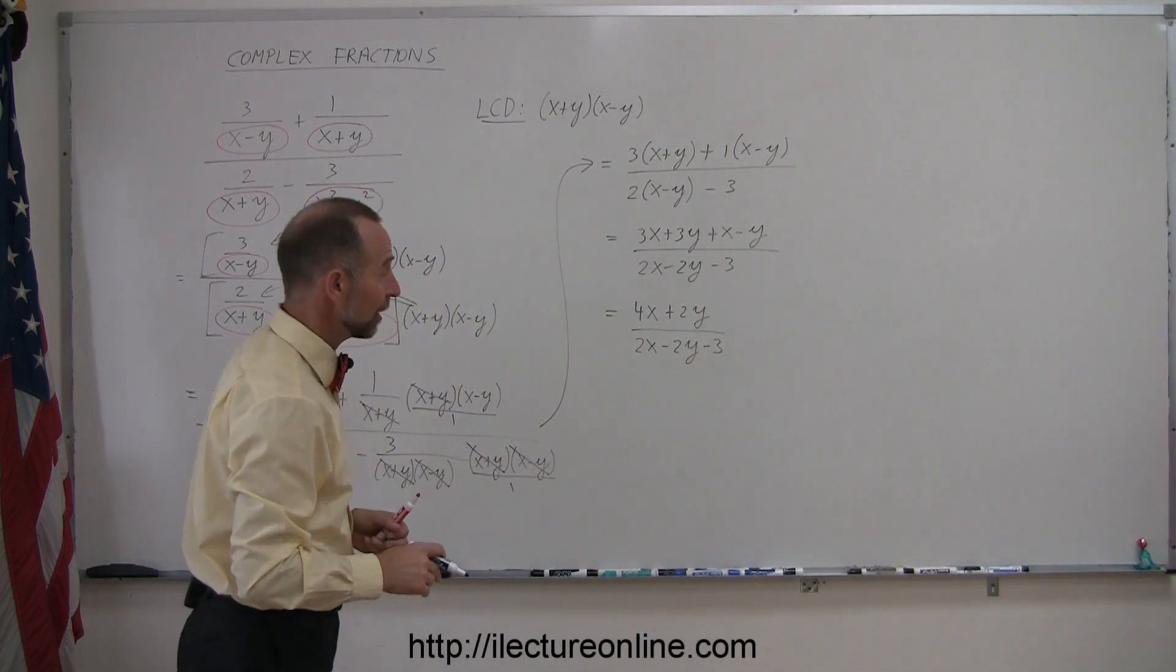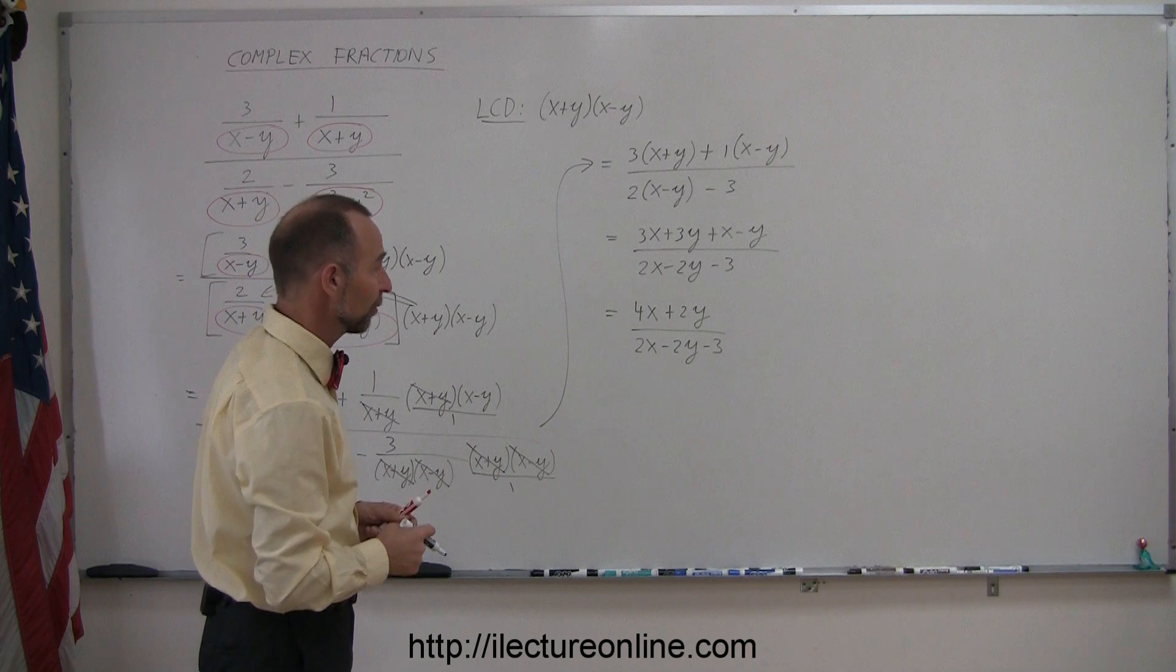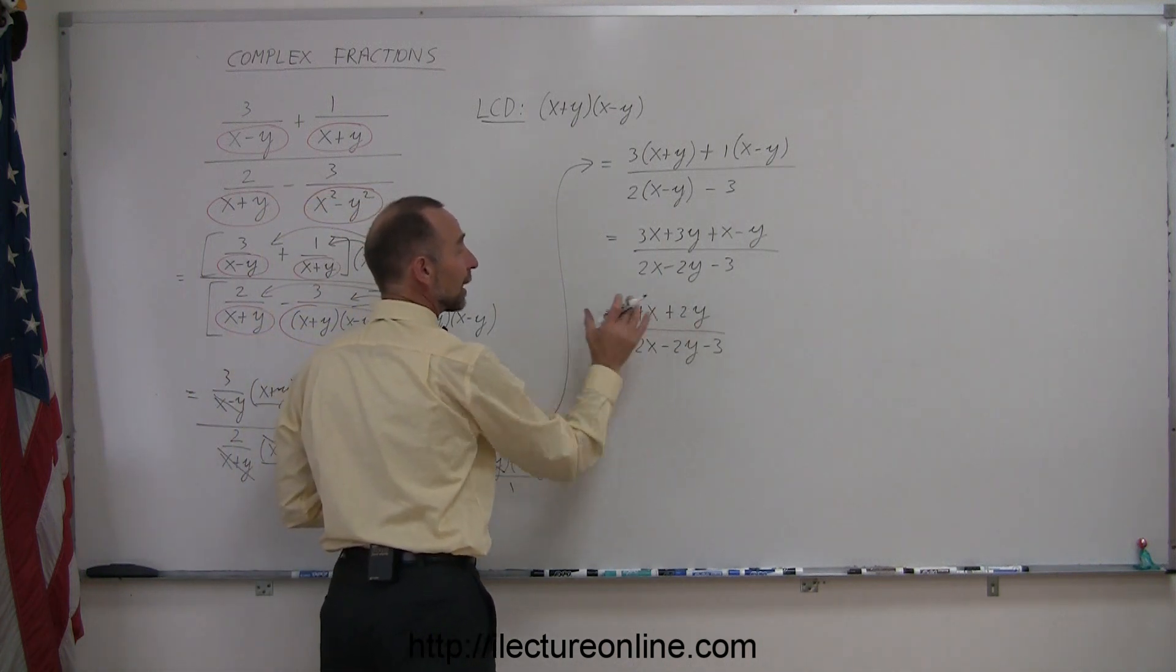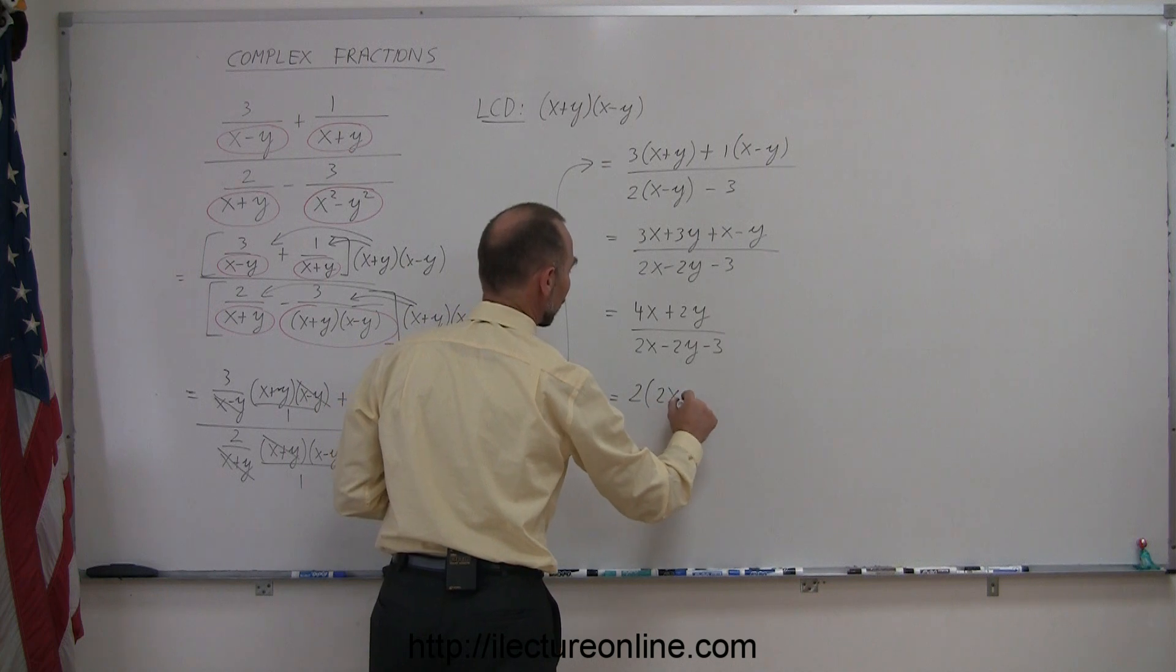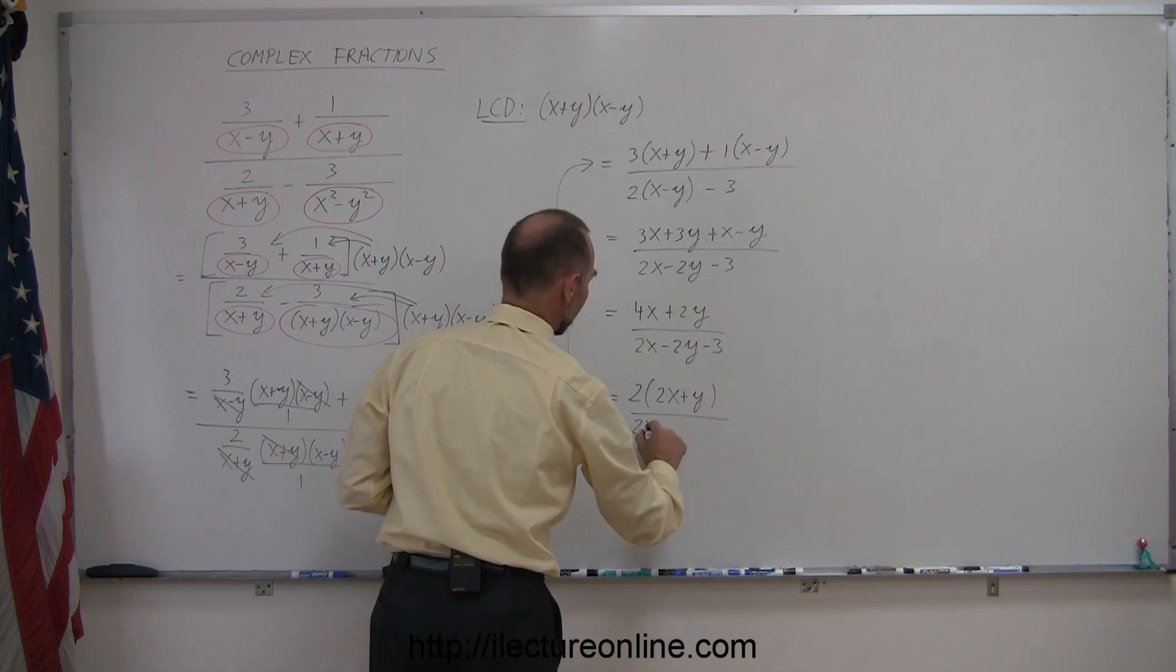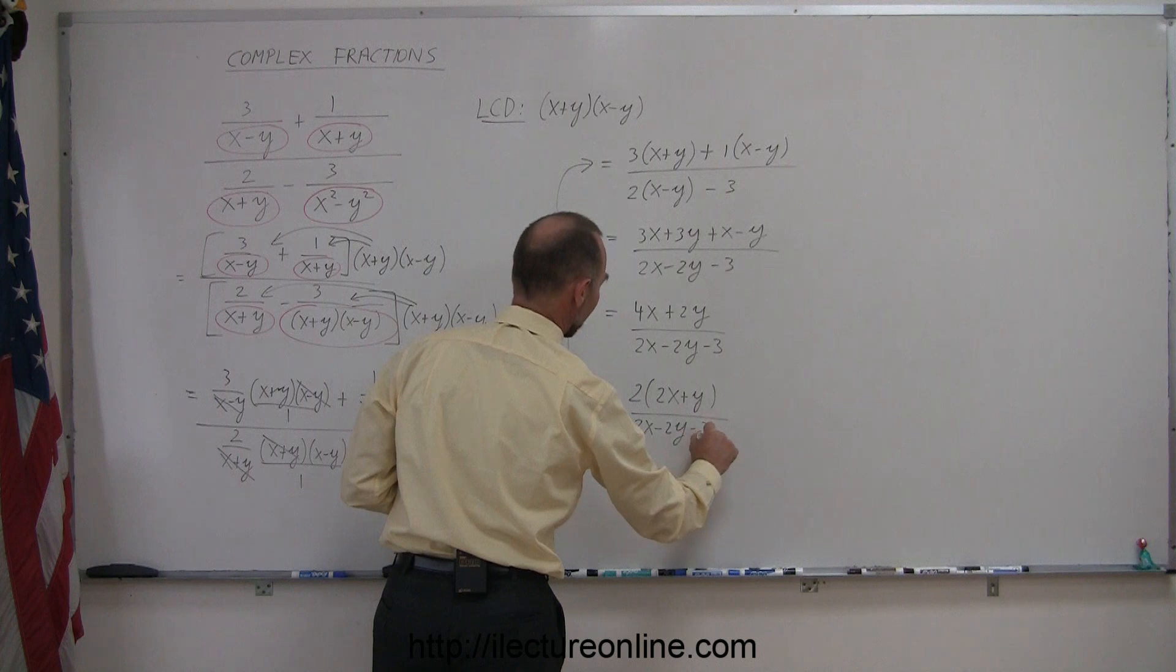And then, to be absolutely completely correct, the most simplest form would be to factor out a 2 from the numerator, so this can be written as 2 times, 2x plus y divided by 2x minus 2y minus 3.